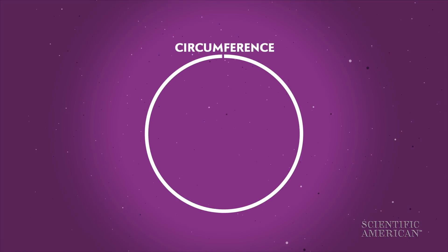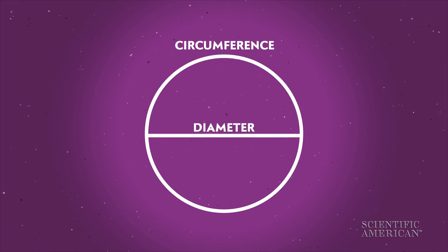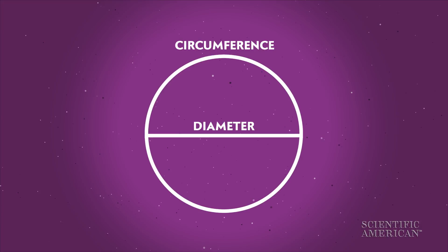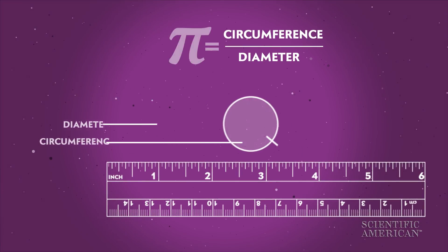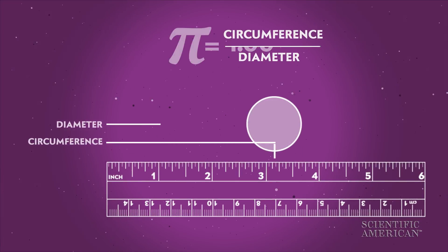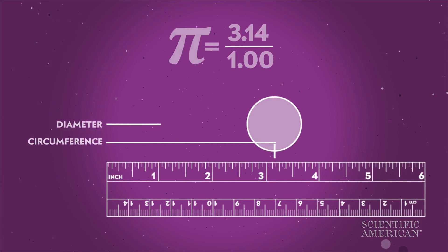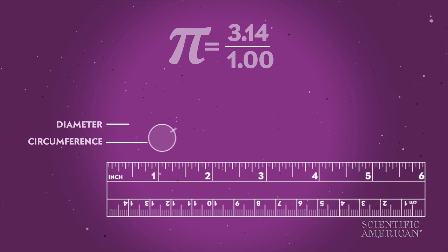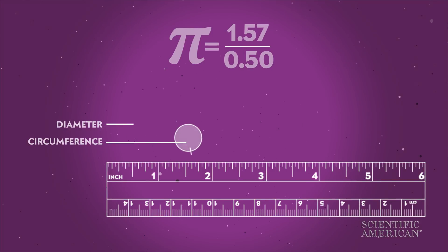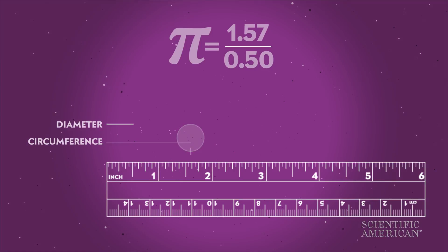Pi relates a circle's circumference to its diameter. It's simply a ratio. Roll a circle along a ruler to measure its circumference, and divide it by the length of the circle's diameter. You'll get pi. Every time.